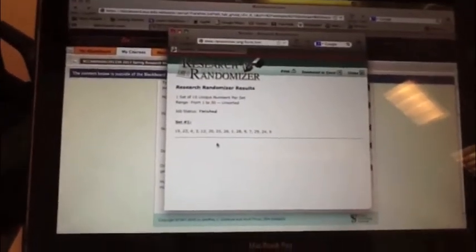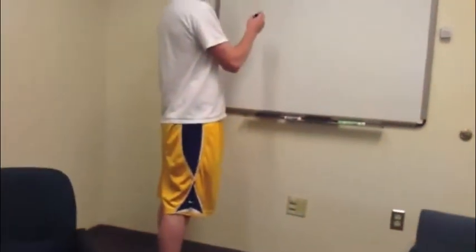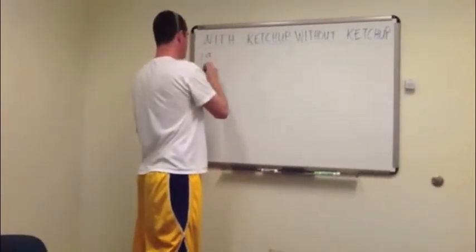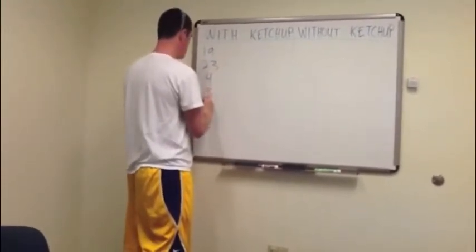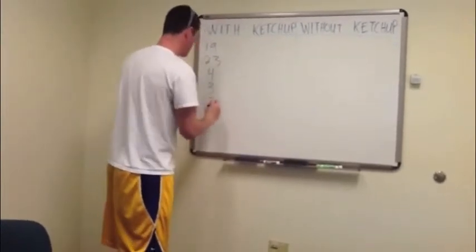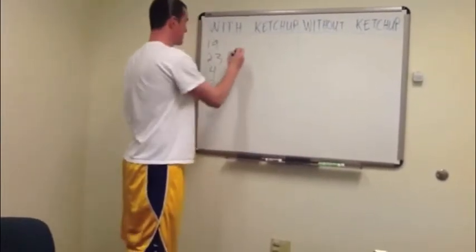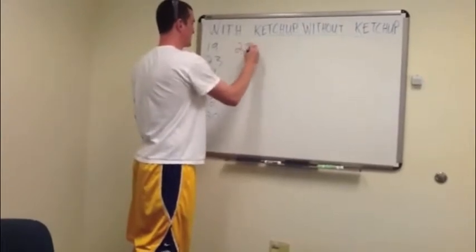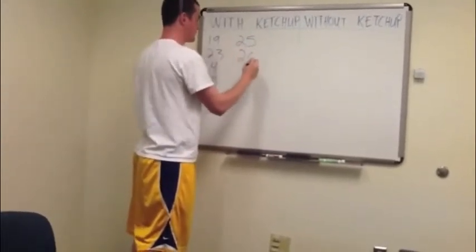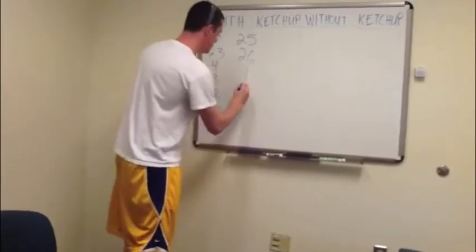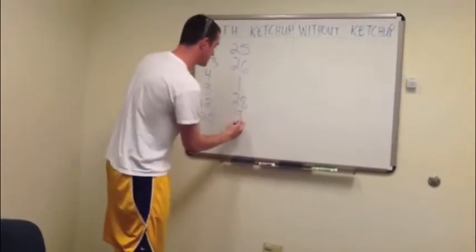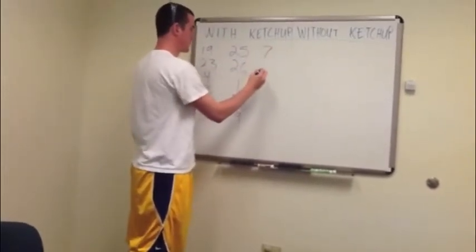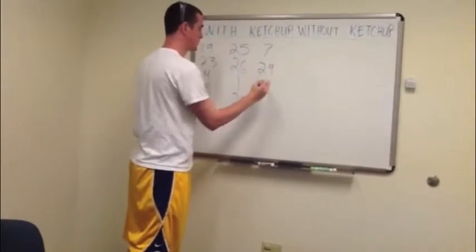There's our set of numbers right there, so the numbers with ketchup are going to be: 19, 23, 4, 3, 12, 20, 25, 26, 1, 28, 9, 7, 29.